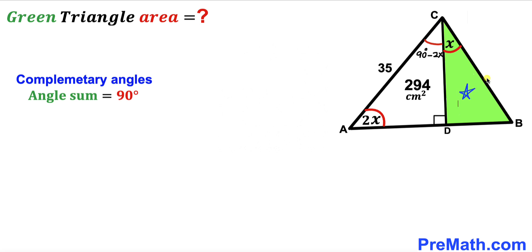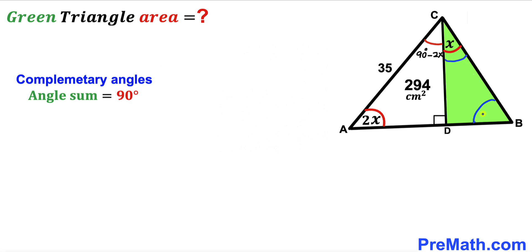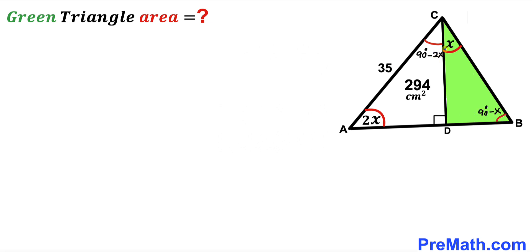Now let's focus on the green shaded triangle. This is a 90-degree angle, so the other two angles are complementary — their sum equals 90 degrees. If this angle is x, then the other angle has got to be 90 degrees minus x.